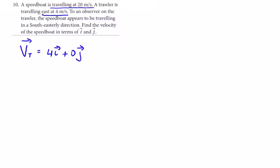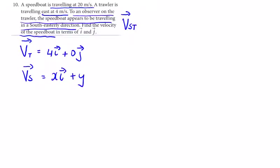To an observer on the trawler, the speedboat appears to be traveling in a southeasterly direction. So the velocity of the speedboat relative to the trawler, let's look at the velocity of the speedboat. We don't know what it is, this is what we're asked here, so we call it xi plus yj.